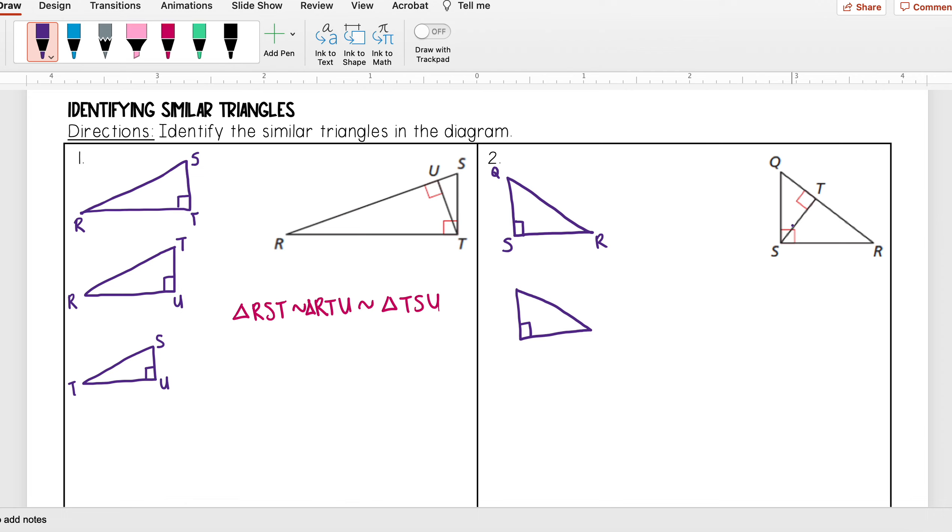First, I'm going to look to see where my right angle is at, and I see that's at T. My smaller leg is with S, and then that leaves R. And then I want to do my next smallest triangle. My right angle is at T again, and then I see that my smallest leg is at Q, and so that leaves S.